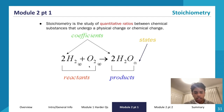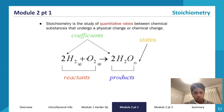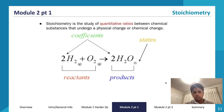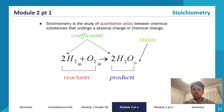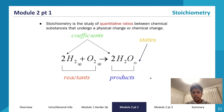If I'm looking at the molar ratio between hydrogen gas and water, the ratio is 1:1, because 2:2 simplifies to 1:1. But if I'm looking at the ratio between hydrogen gas and oxygen, it's 2:1, because oxygen has no written coefficient so it's just 1. And if I'm looking at oxygen gas to water, I get 1:2. That's how you use coefficients to find molar ratios.